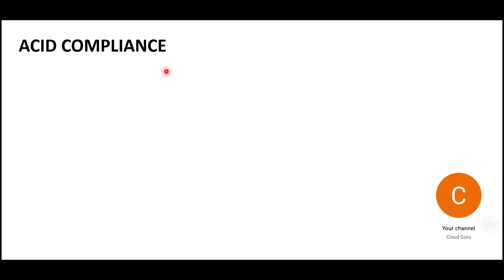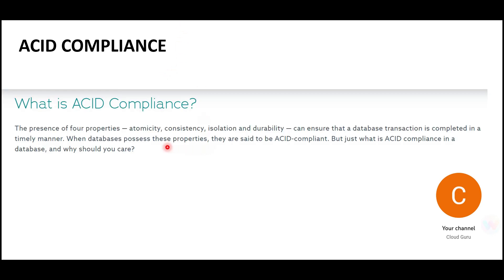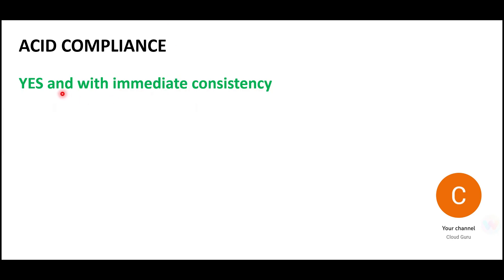Whenever we talk about a database, ACID compliance is important — atomicity, consistency, isolation, and durability. Neptune is compliant with immediate consistency, meaning it does not take seconds to reflect the latest data. When you fire a query, it is immediately consistent. Regarding security, just like other databases and features, Neptune supports in-transit encryption, at-rest encryption, KMS integration, and security groups.